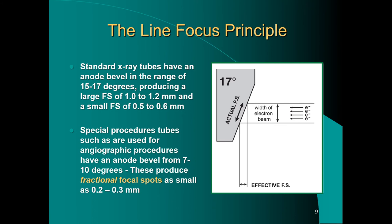Standard x-ray tubes anode angles range from 15 to 17 degrees, giving us a focal spot of about 1.0 to 1.2 millimeters for the large size and a small of about half that. When you choose focal spot, the small focal spot is about half the size of the large focal spot. A small focal spot means more heat concentrated into that area, so you have to take those considerations into account.